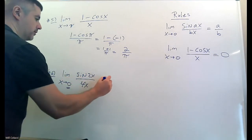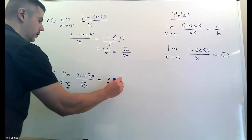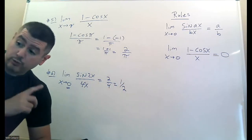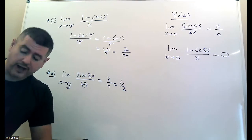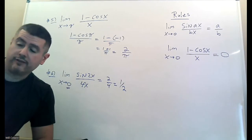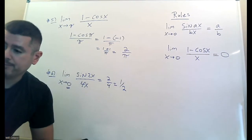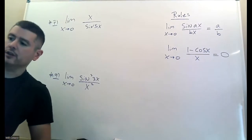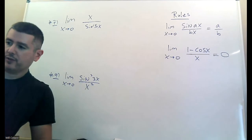This one falls under the a-over-b category — x is going to zero. Just take the numbers in front. Don't do anything complicated or fancy. I'm giving you that rule, so use it. Don't do long convoluted work when you don't need to. Things are going to get a little more advanced now, so I'll start jumping around.